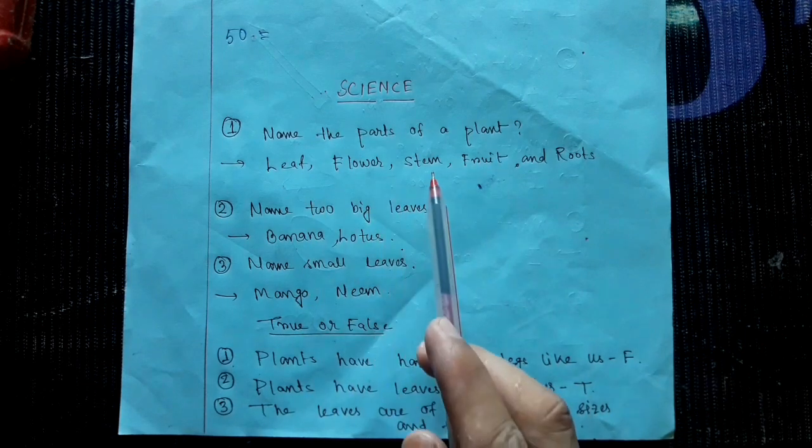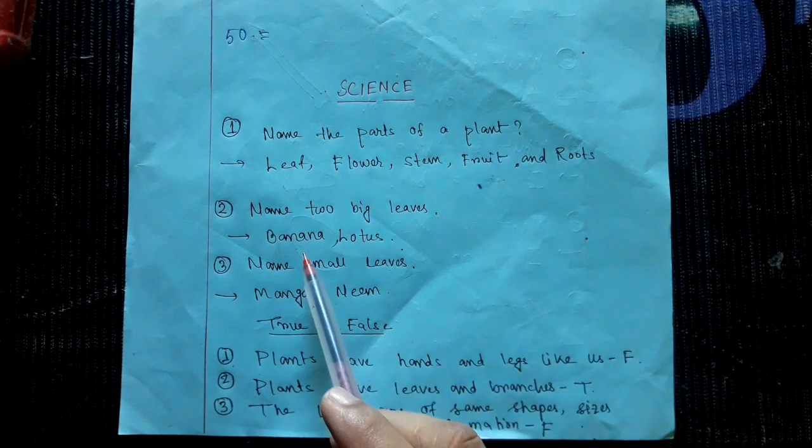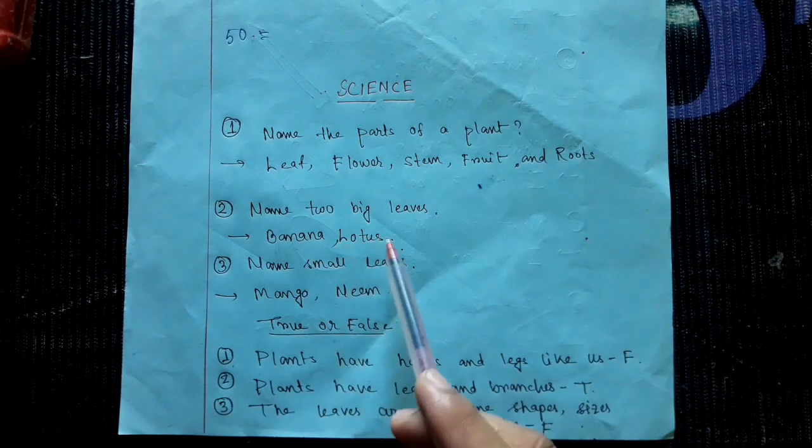of a plant: leaf, flowers, stem, fruit, and roots. Name two big leaves: banana tree leaves and lotus leaves.